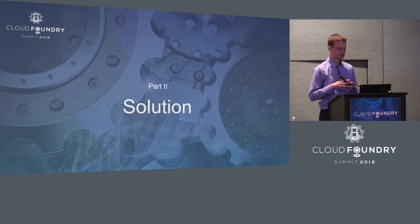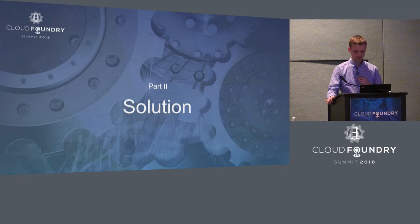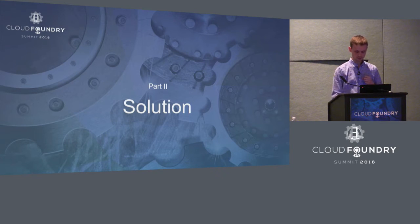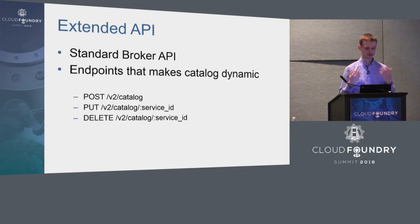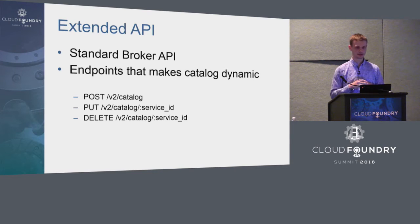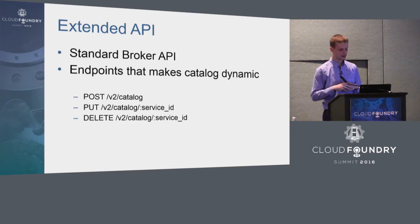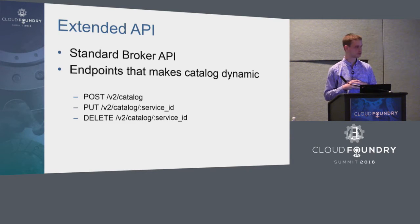In the second part we are going to talk about the solution called Application Broker, which was built at Intel, and it solves all the problems Steve was facing. We introduced an extended API: besides the standard broker API imposed by Cloud Foundry documentation, we are introducing three other endpoints to introduce, update, and delete offerings. In the background we have a MongoDB instance to persist information related to all offerings.